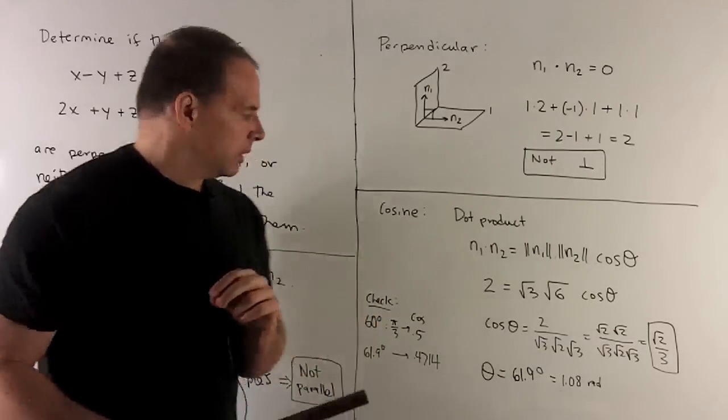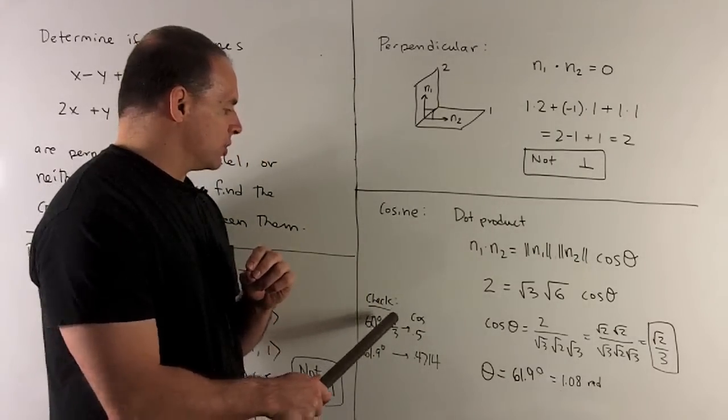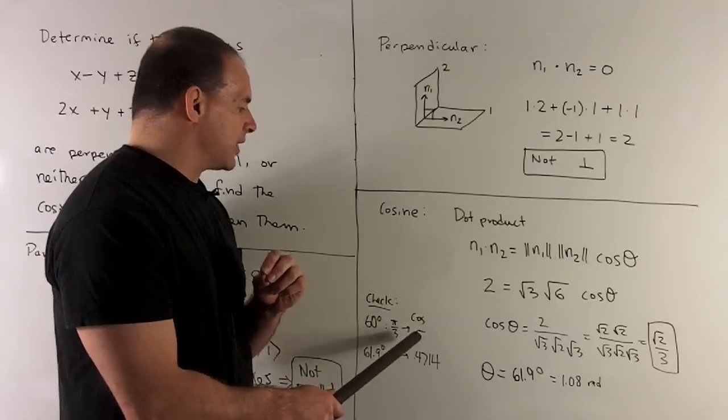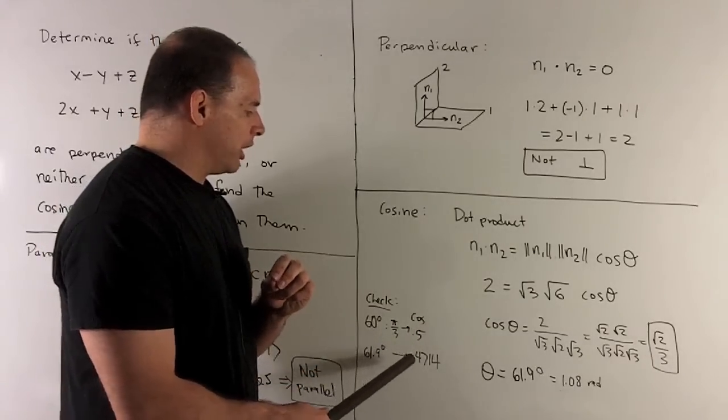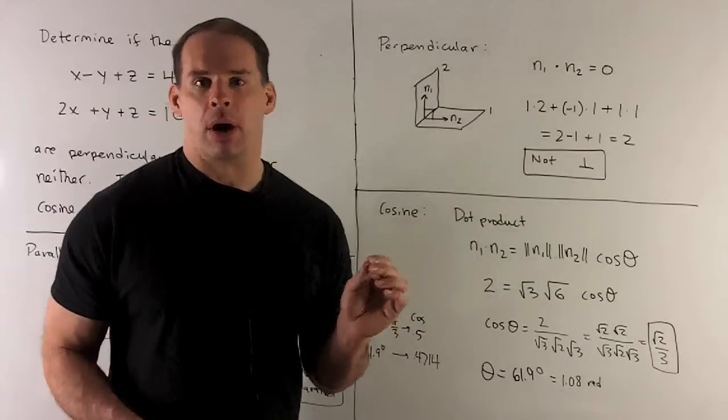Okay, to check on this, note, if I take 60 degrees, which is pi thirds, the cosine that comes out is half. For 61.9 degrees, you're getting a 0.4714. So we're in the ballpark.